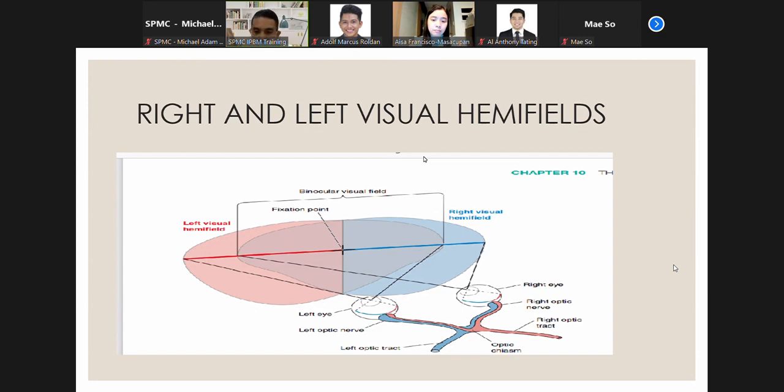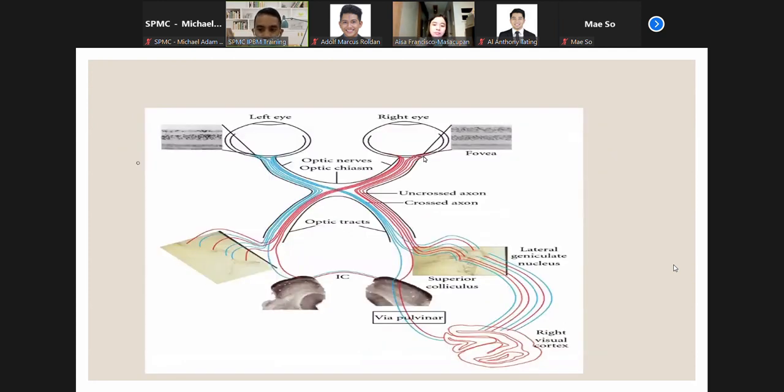The binocular visual field is the central portion of both visual fields viewed by both retinas. Objects in the binocular region of the left visual hemifield will be imaged in the nasal retina of the left eye and the temporal retina of the right eye. Because the fibers from the nasal portion of the left retina cross to the right side of the optic chiasm, all information about the left visual hemifield is directed to the right side of the brain.